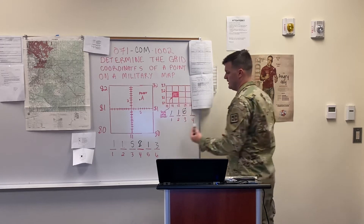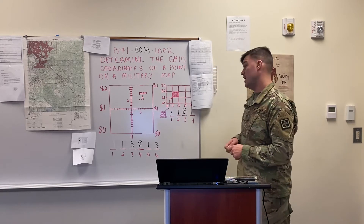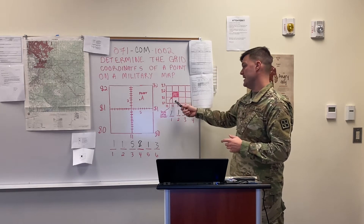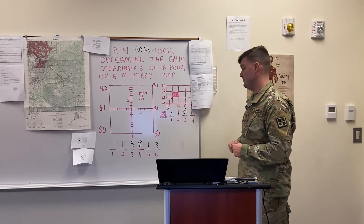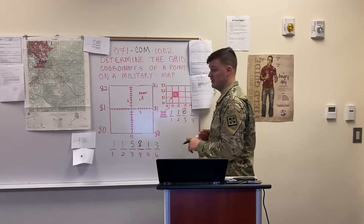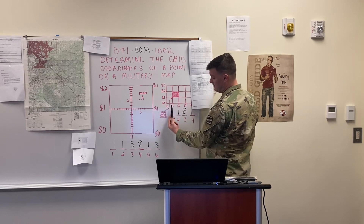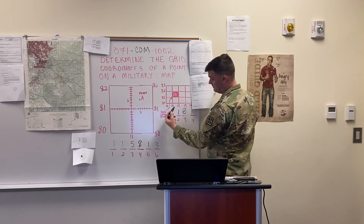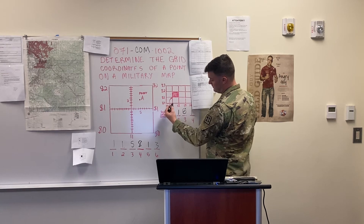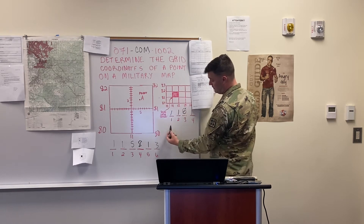Your address here is 1181 for the four-digit grid square. This is your most broad grid point — it's not exact, just a general location on the map. You'd send this if someone wanted to know what area you're in. To find it, start at the southwest corner, read left to right — the first value is 11 — then read from bottom to top and you get 81. So your four-digit grid coordinate address is 1181.